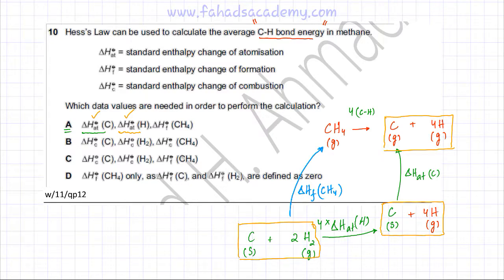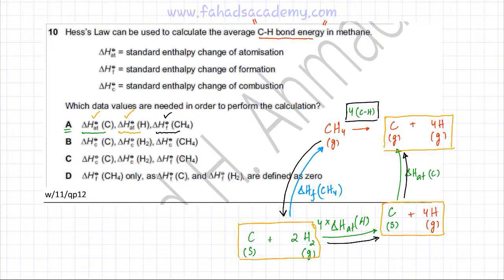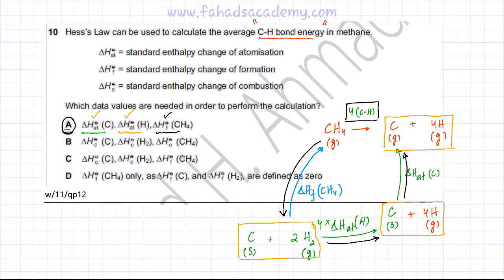The route goes from CH₄, then follows the first path, then the second path, and finally reaches the products C(g) + 4H(g). The enthalpy for the CH bond energy equals this alternative path. Since option A provides enthalpy of atomization of carbon, enthalpy of atomization of hydrogen, and enthalpy of formation of CH₄, option A is the correct option — we can construct a complete Hess cycle using this data.